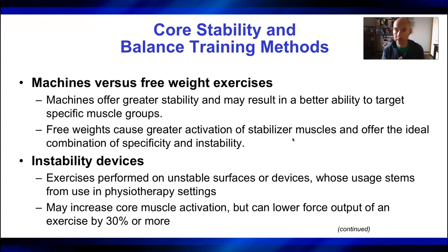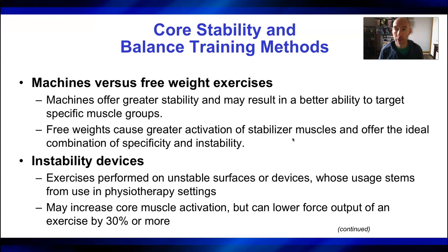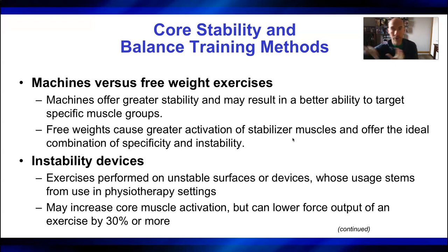With some populations — like elderly or novice populations — they might learn the movement pattern with a machine and then you progress them to free weights, which will be a bit more challenging. With machines, the range of motion is fixed, whereas with free weights it's not. For novices, that fixed range of motion can be good just to get them started, and then you slowly transition them to free weights.